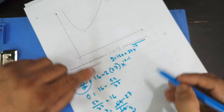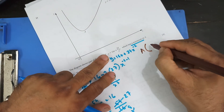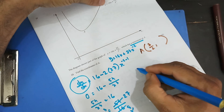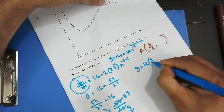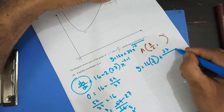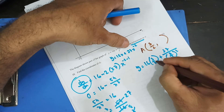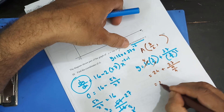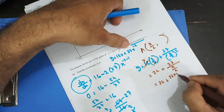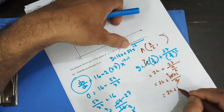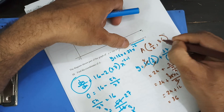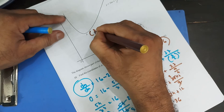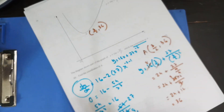I have the x-coordinate of A as 3 over 2. Now I need the y-coordinate. Substituting into y equals 16x plus 27 over x squared: y equals 16 times 3 over 2 plus 27 divided by (3 over 2) squared, which gives 24 plus 27 times 4 over 9. That's 24 plus 12 equals 36. So the coordinates of A are (3/2, 36).